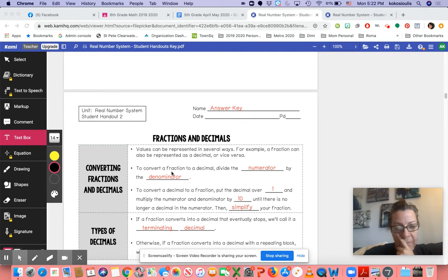But to convert from a fraction to a decimal, you just divide the numerator by the denominator. And to convert a decimal to a fraction, you put the decimal over one and multiply the numerator by 10 until there's no longer a decimal in the numerator and then simplify. I kind of don't like this description. I would rather just look at it and go, it's a hundredths place, it's a thousandths place, and then put as many zeros at the bottom as I can. So I'll show you how to do it my way.